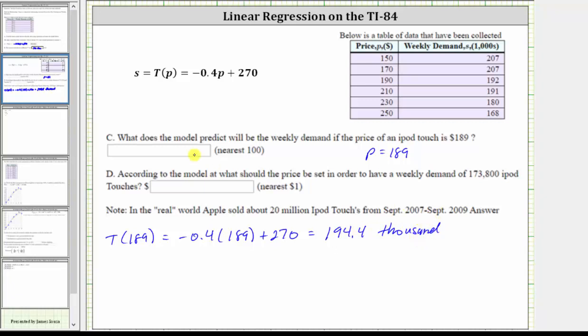Which we're asked to round to the nearest hundred. So to convert this, we multiply 194.4 times 1,000, which is equal to 194,400, and this has already rounded to the hundreds place value, and therefore this is the value we enter for part C. The prediction will be the weekly demand will be 194,400 iPods if the price is $189.